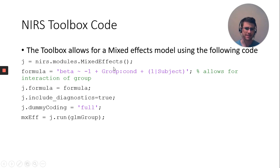You would set this up as a job, put in the formula j.formula, replace the default formula, move through, dummy coding you can put in as full, then run it. In this case, my GLM I call glmgroup, that's my modeled output, and I save it as mixed effects.